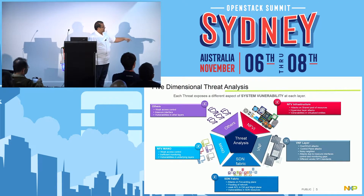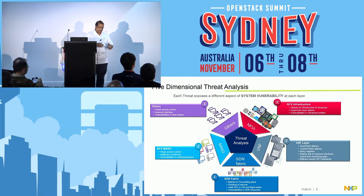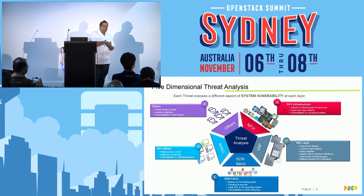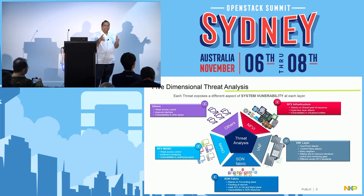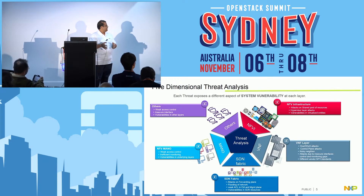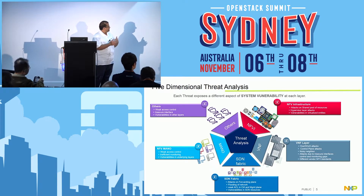Different vendor NFV standards make it more difficult to maintain security hardening of the VNF layer. Moving to the SDN fabric, we see attacks in the forwarding plane, flooding of the network, vulnerabilities in SDN resources, and weak API endpoints. These impact the security of the networking fabric stitching VNFs together to realize the network service. Moving forward, the MANO, which is the intelligent part in the SDN and NFV world, has weak access control and insufficient monitoring of activities and resources.